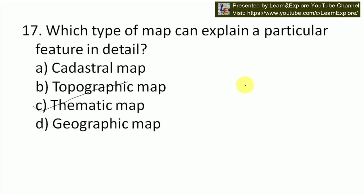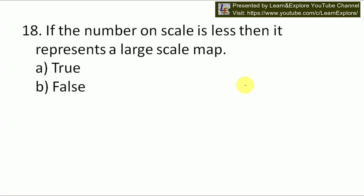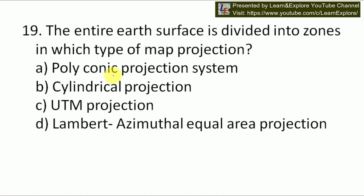Next question: if the number on the scale is less than 10, it represents a large scale map — justify this sentence. Scale can be defined as the distance on map to the distance on the ground. There are different types of scale available. In order to have more accuracy, we need a less number on scale, which indicates a large map with good details. Our answer will be A — true.